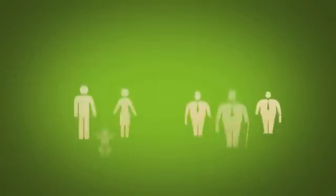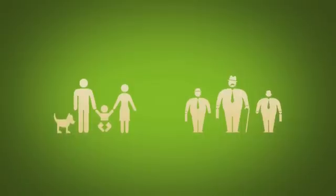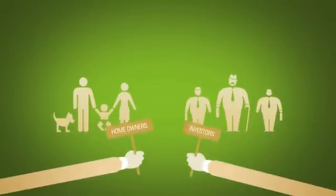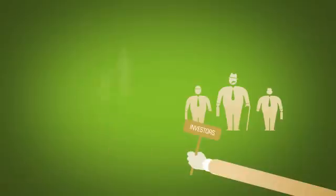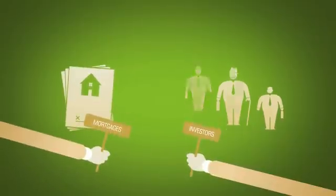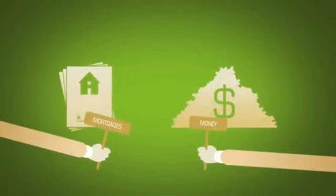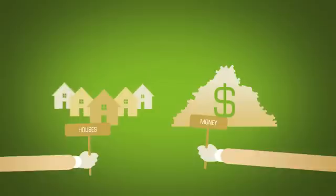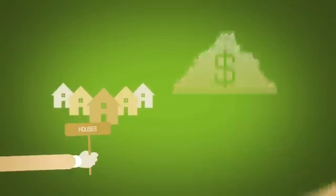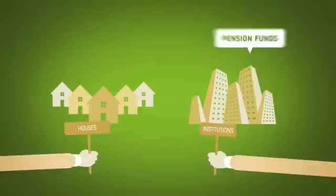Here's how. The credit crisis brings two groups of people together: homeowners and investors. Homeowners represent their mortgages, and investors represent their money. These mortgages represent houses, and this money represents large institutions like pension funds,